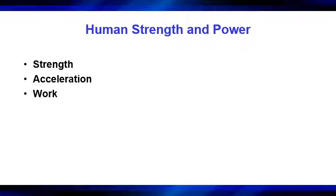Work is a product of force and displacement. When calculating work, you look at how much force is applied and how far that distance is traveled. Using a barbell squat as an example: if you squat 400 pounds, the displacement is however far the barbell travels. You'd take the 400 pounds and multiply it by the distance the barbell travels — that's mechanical work.